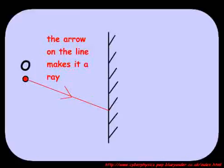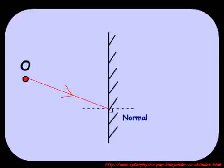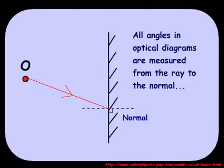Add the normal at the point where the ray hits the mirror. A normal is always drawn wherever a ray hits the boundary between two media. If we were going to construct the reflected ray for this incident ray,